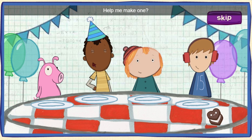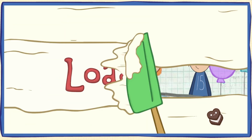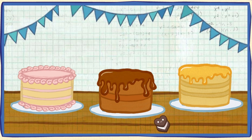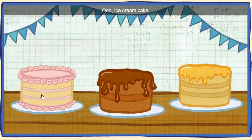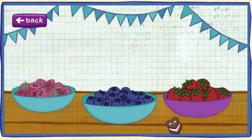Help me make one. First, pick a flavor. Click on the cake you want to make. Ooh, ice cream cake! Now it's time for some toppings. Click on the fruit you want to use.